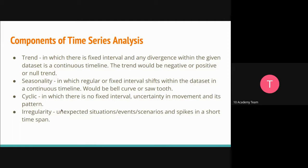The second component is seasonality — it's a regular or fixed interval shift within the datasets in a continuous timeline. To say that a time series is seasonal, it has to exhibit irregularity over a period and change the mean of the series. Seasonal changes are generally followed by a clock or calendar — it could be monthly. We might have holidays, weekdays, or weekends that are affecting our data.